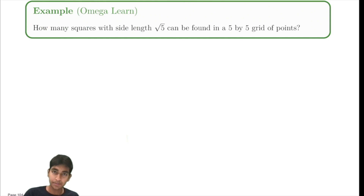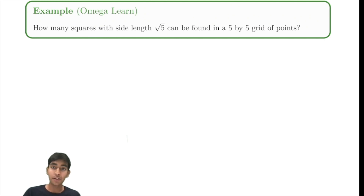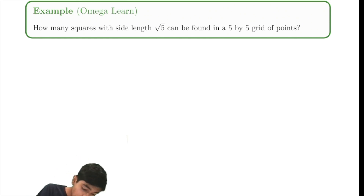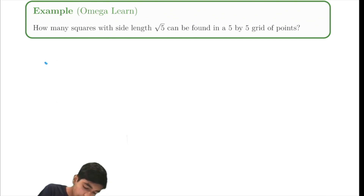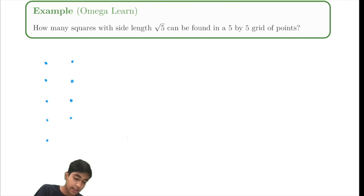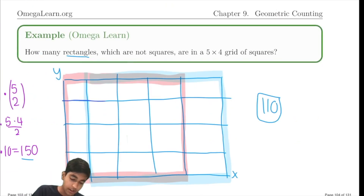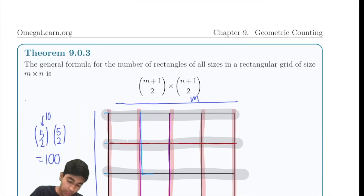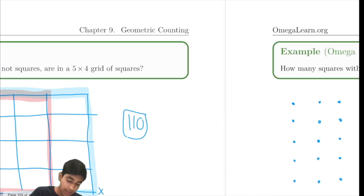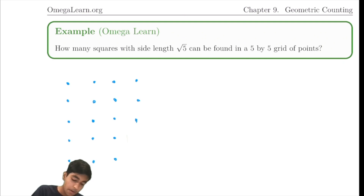Let's now explore this problem: how many squares with side length square root 5 can be found in a 5 by 5 grid of points? This is not a regular grid — this time it's a grid of points. A key observation is that square root 5 is not an integer, which means the squares are not going to be on the grid lines. They're going to have diagonal side lengths, so things are going to be more interesting.